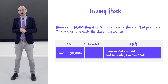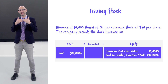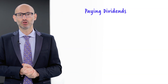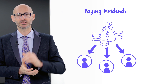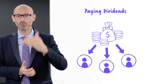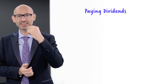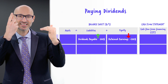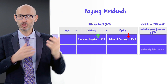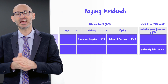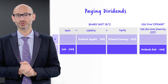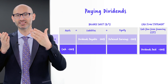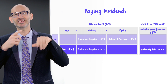If the par value is one dollar, then the common stock for 10,000 shares is 10,000, and the rest of the 490,000 is accounted for under paid-in capital. If you are an equity holder, you are entitled to dividends. From the company's point of view, if you declare dividends, the accounting is done by reducing equity and increasing liabilities.